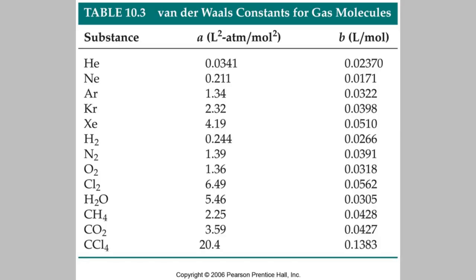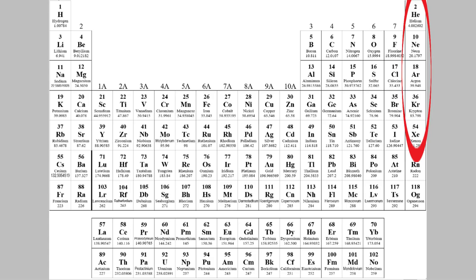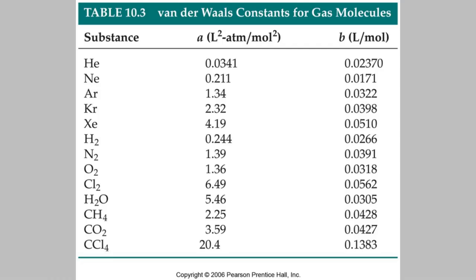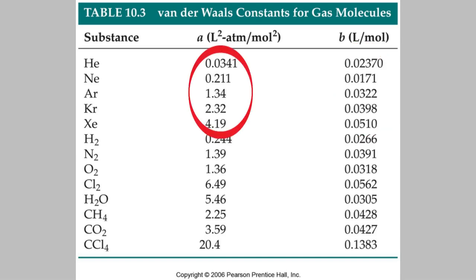A and B are different for every compound, so we need to look them up in a table. Here's a table that lists several values of A and B for different gases. Notice that the values kind of make sense — for example, look at the first five gases, which are the first five gases in the last column of the periodic table. For the most part, the value of B gets higher as we go down the periodic table, because B tells us the volume the atoms take up, and we expect them to be bigger further down. The value of A also gets bigger as we go down, because the number of electrons and protons increases, and A tells us how strong the attractions are between the atoms.